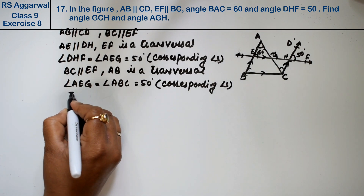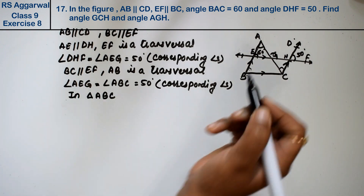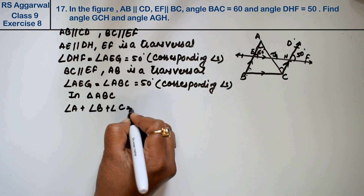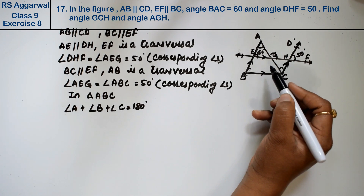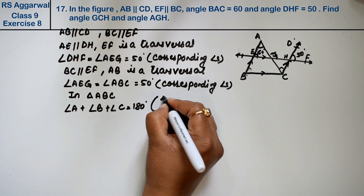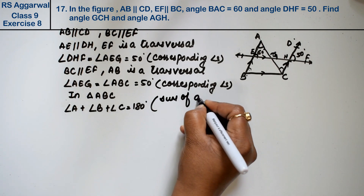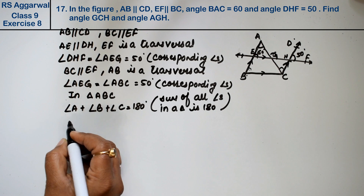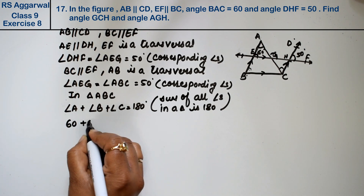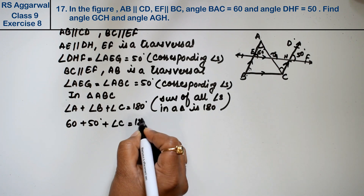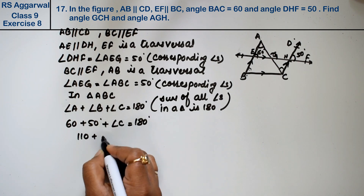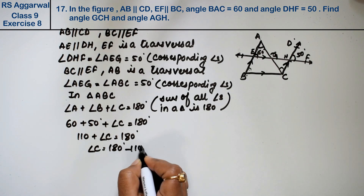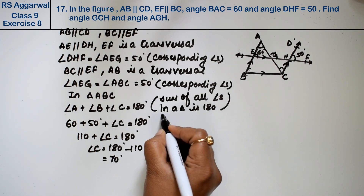In triangle ABC, we know angle A plus angle B plus angle C equals 180 degrees. We have angle A equals 60 degrees and angle B equals 50 degrees, so angle C equals 180 minus 110, which is 70 degrees.